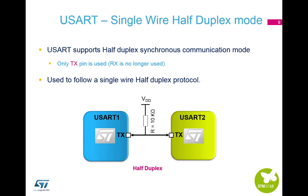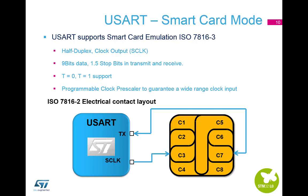The TX pin is always released when no data is transmitted. Thus, it acts as a standard I/O in idle or in reception. It means that the I/O must be configured so that TX is configured as alternate function, open drain with an external pull-up. In smart card mode, the smart card protocol is half-duplex. The clock is provided to the card for the card's internal operation, and the bi-directional line is still asynchronous.